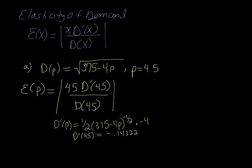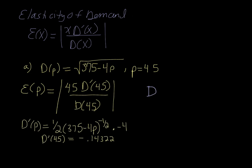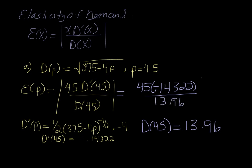The other piece we needed was D(p). So D(45), and D(45) happens to be 13.96. So we have 45 times 0.14322, but the negative won't matter because we're going to take the absolute value, over 13.96. And when all is said and done, you get 0.4617, which is definitely less than 1. So we would say that this one is inelastic, and it's okay to raise prices because revenue will still increase.